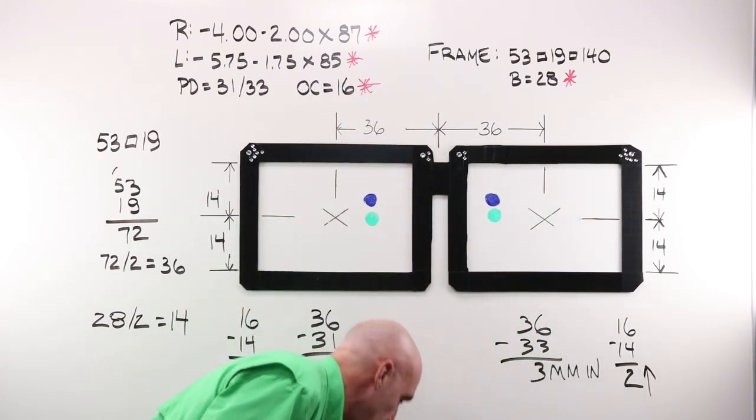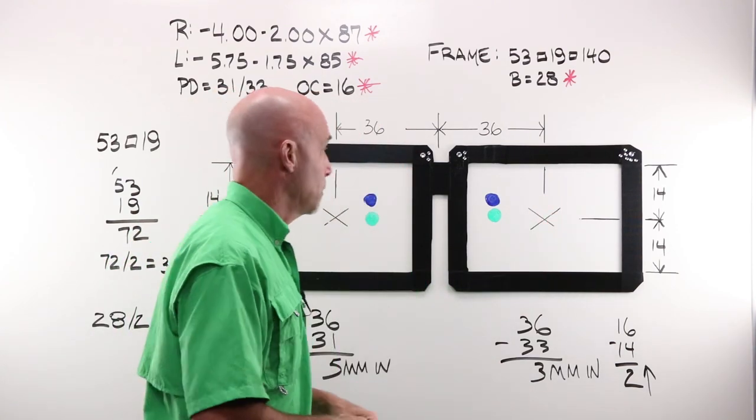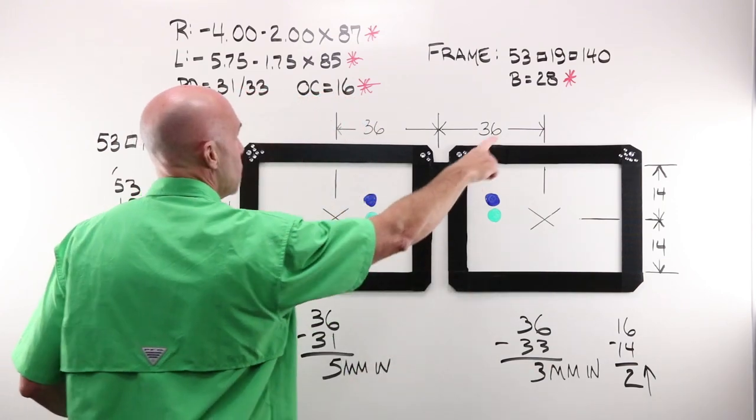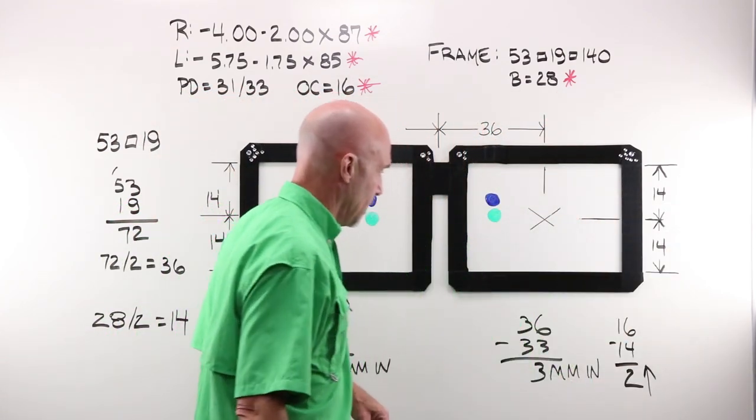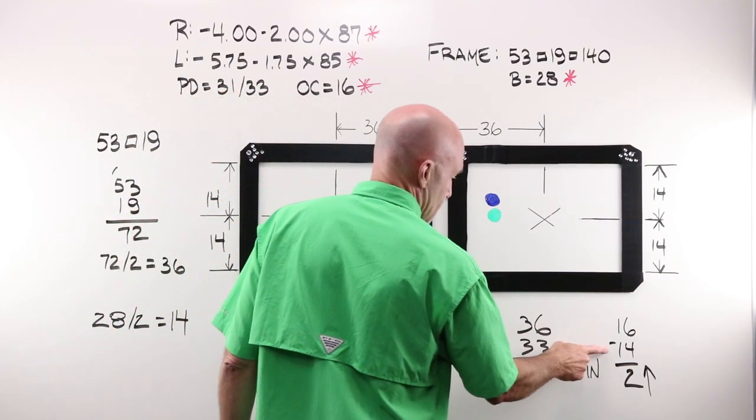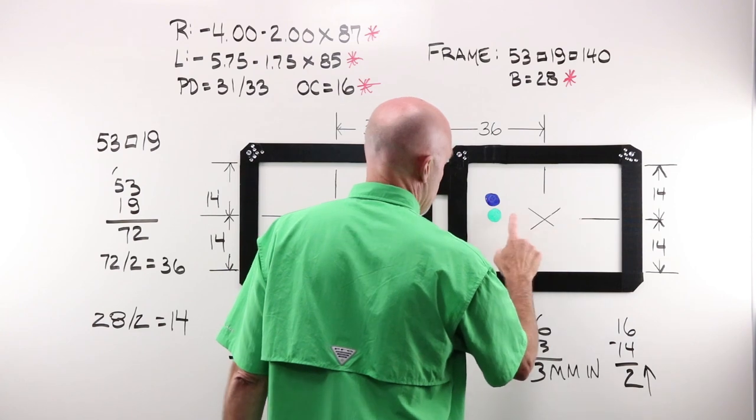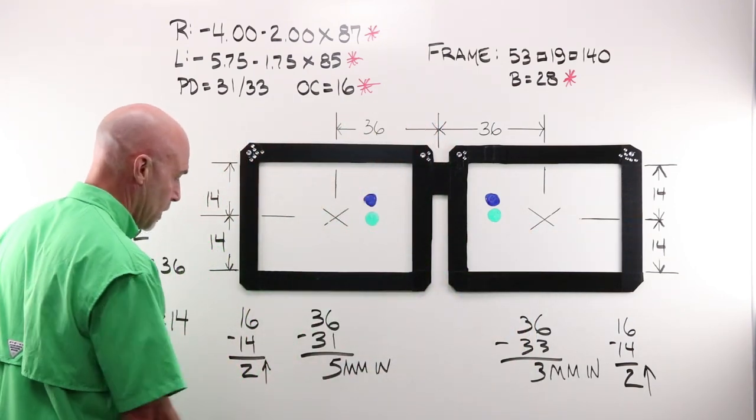How do I determine how far I'm going to move that up? Much in the same way we do as a monocular PD. I take my B, which is 28, I split it in half, 14, 14. And I take my OC height of 16. 16 minus 14 says that I'm going to be moving this lens two up. 16 minus 14, two up.